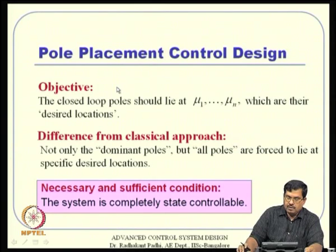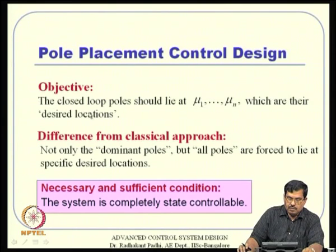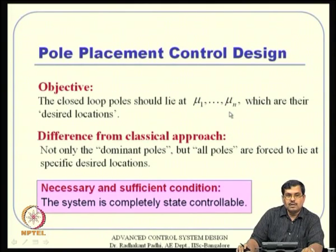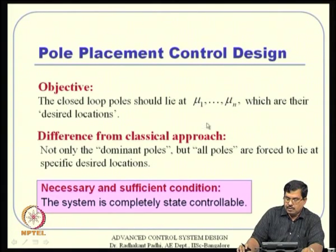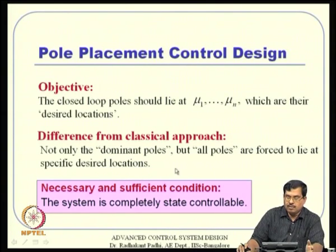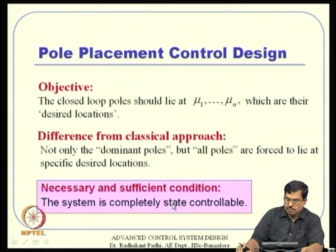For pole placement control design, the objective is that the closed-loop poles should lie at specified locations mu_1 to mu_n. These are the desired locations. The difference from the classical approach is that not just the dominant poles but all poles need to be placed. There is no need to approximate as a second-order system; every pole can be altered. A necessary and sufficient condition is that the system must be state controllable.